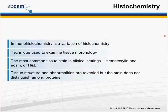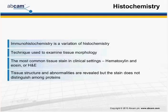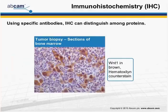With histochemistry, the stains are much more general. The common stain used is hematoxylin and eosin. Hematoxylin will non-specifically stain nuclei a blue color, and the eosin will counterstain the cytoplasmic regions with a pink or red stain. While this is a great technique to observe tissue structure and abnormalities, the stain does not distinguish among proteins, so there's no specific information about what's going on in the tissue. In order to get around this issue, immunohistochemistry was developed, and using specific antibodies, IHC can distinguish among proteins.